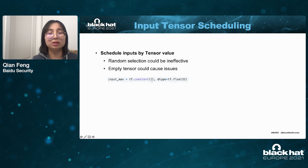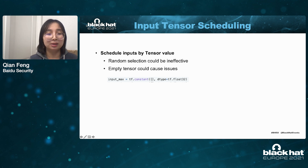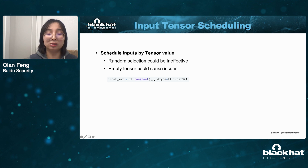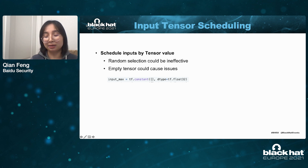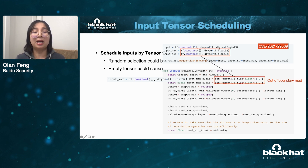We can schedule inputs by their tensor value, but random selection on tensor values is not a good choice because the tensor value is an integer or string with a large search space. Here is a hint: empty tensors could be a good choice — they always cause issues. We find many bugs in TensorFlow are caused by empty tensors. Here is one example: a constant tensor with an empty value looks fine, but if used as input to a fake quantization range operation, the kernel does not consider the empty tensor, still accessing the first element, which causes an out-of-bounds read issue.